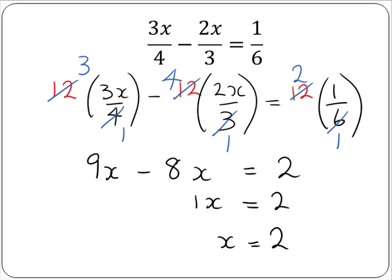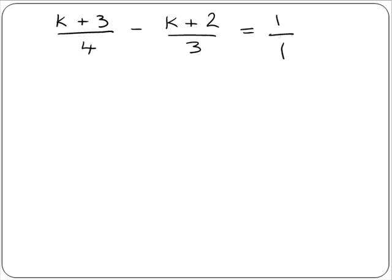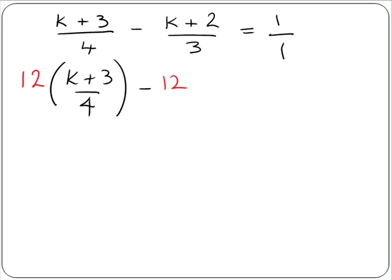Now we look at another example. Here again we have an equal sign, so it's an equation. Our first step again is to get a common denominator. A denominator common to all the numbers 4, 3 and 1 will again be 12. We multiply each of our terms by the common denominator of 12: so we have 12 by (k plus 3) over 4, then 12 by (k plus 2) over 3, and 12 by 1 over 1.